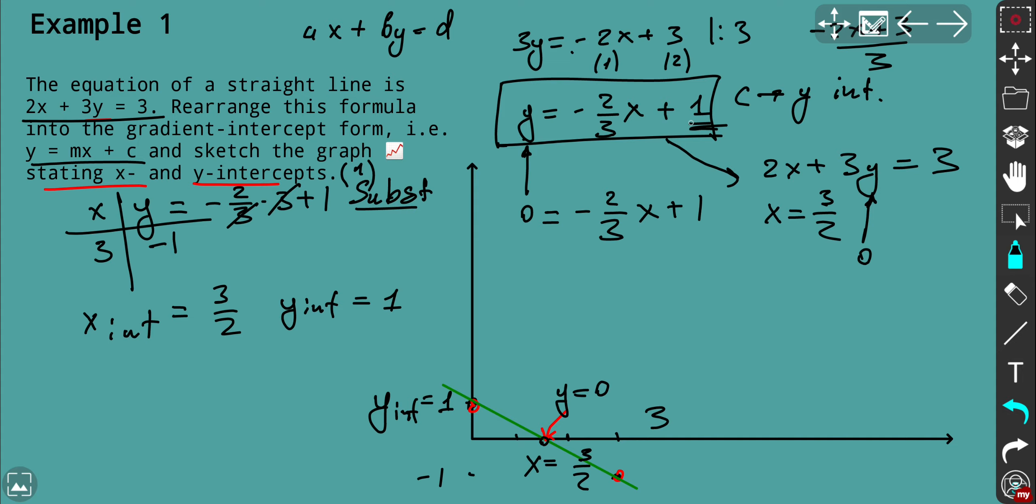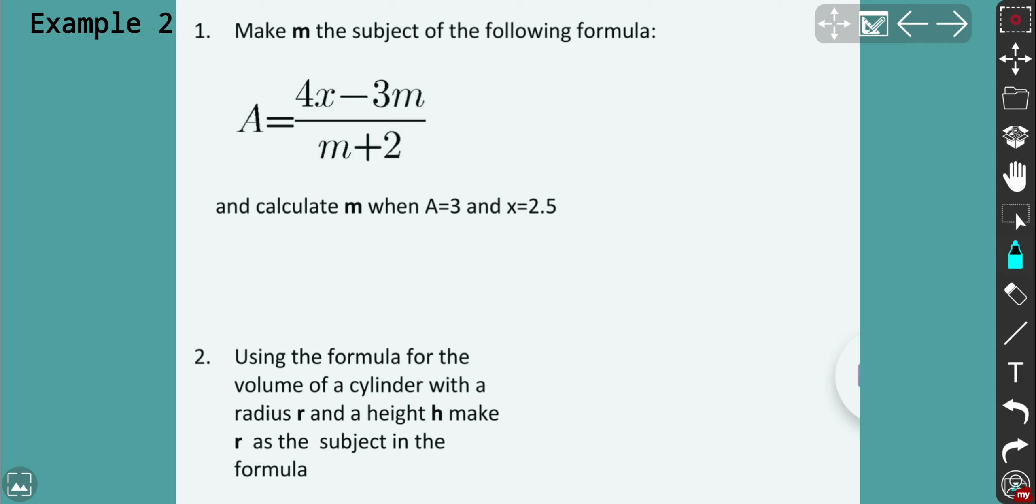Let's go to example 2. Right there we have an equation and we need to make M as a subject in the formula. So that's a fractional one. And then you need to calculate when A equals 3 and x equals 2.5.